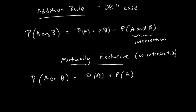If it is not mutually exclusive and there is an intersection, the probability of A or B equals the probability of A plus the probability of B minus the probability of A and B — the intersection. If they are mutually exclusive, there is no intersection, so the formula simplifies to just P(A) plus P(B).